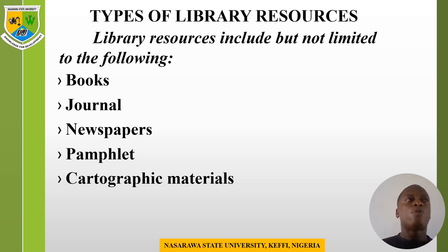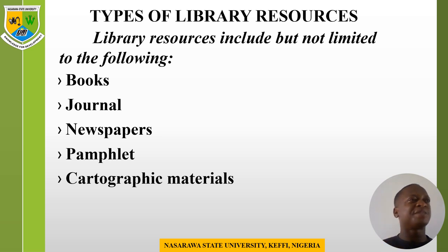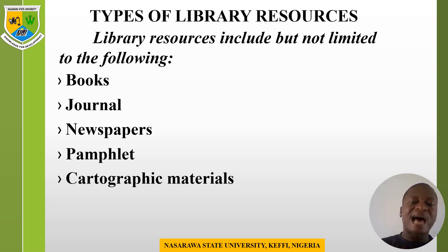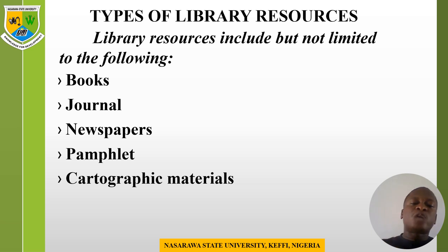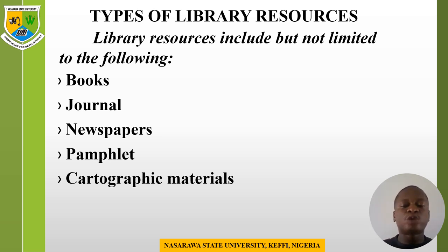Number one among library resources is books. A book is an information resource bound by two cover pages with 49 pages and above. According to UNESCO, a book is a bound non-periodical publication having 49 or more pages, exclusive of cover pages, written by a single author or more, published and made available to the public. If it is less than 49 pages, it is referred to as a pamphlet.